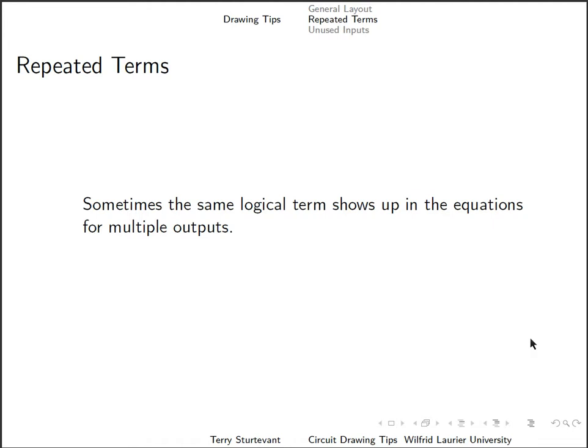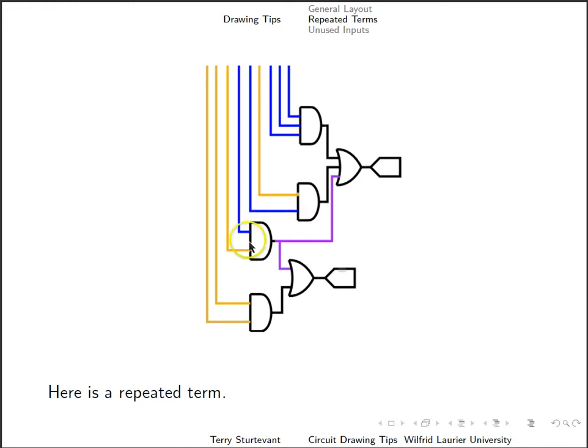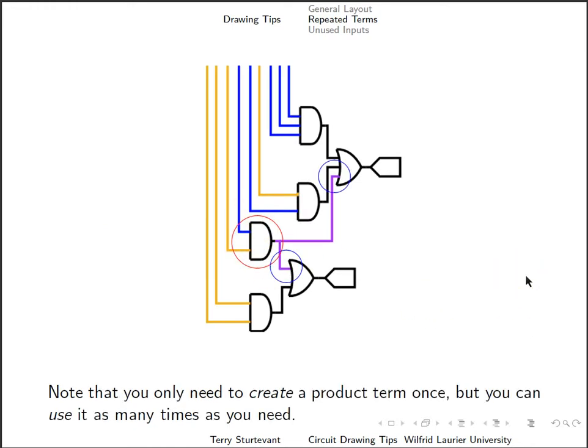Sometimes the same logical term shows up in the equation for multiple outputs. This makes drawing the circuit easier. Here is a repeated term. You notice that you only need to create the product term once, but you can use it as many times as you need by having wires go from that one output to as many sums as you need.